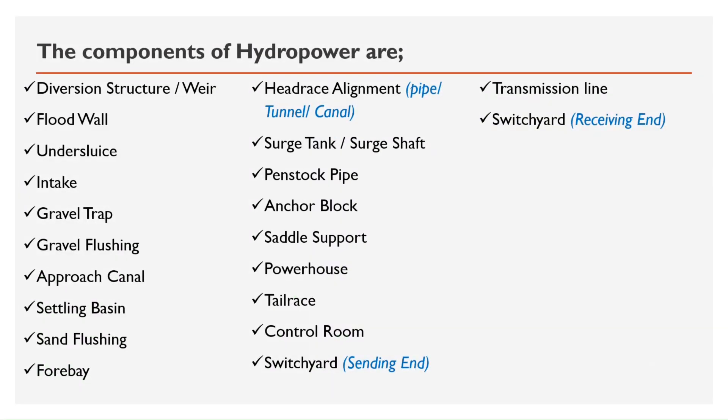Additional components include: head race alignment, surge tank, surge shaft, penstock pipe, anchor block, saddle support, powerhouse, tail race, control room, switchyard, and transmission line.